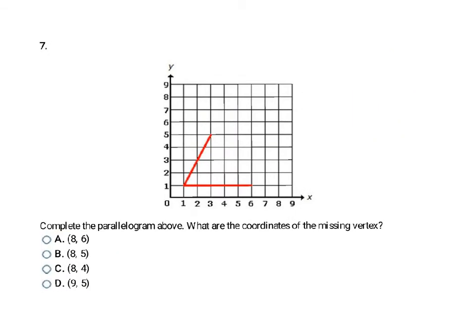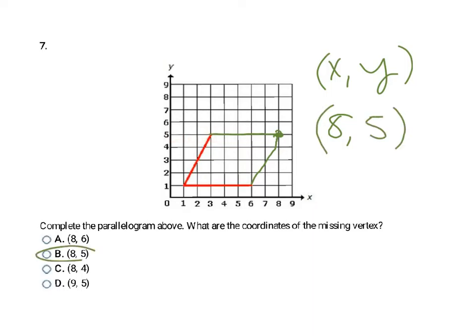This problem has me drawing a parallelogram. A parallelogram is a quadrilateral with two sets of parallel sides where opposite sides are congruent. The bottom side is easier to count since it's not diagonal — it's 1, 2, 3, 4, 5 blocks long. So the top side also needs to be five blocks long: 1, 2, 3, 4, 5 — placing the missing point right there. Drawing in the rest of the parallelogram confirms it looks correct. The x-coordinate of that point is 8 and the y-coordinate is 5, so my final answer is 8, 5, which is choice B.